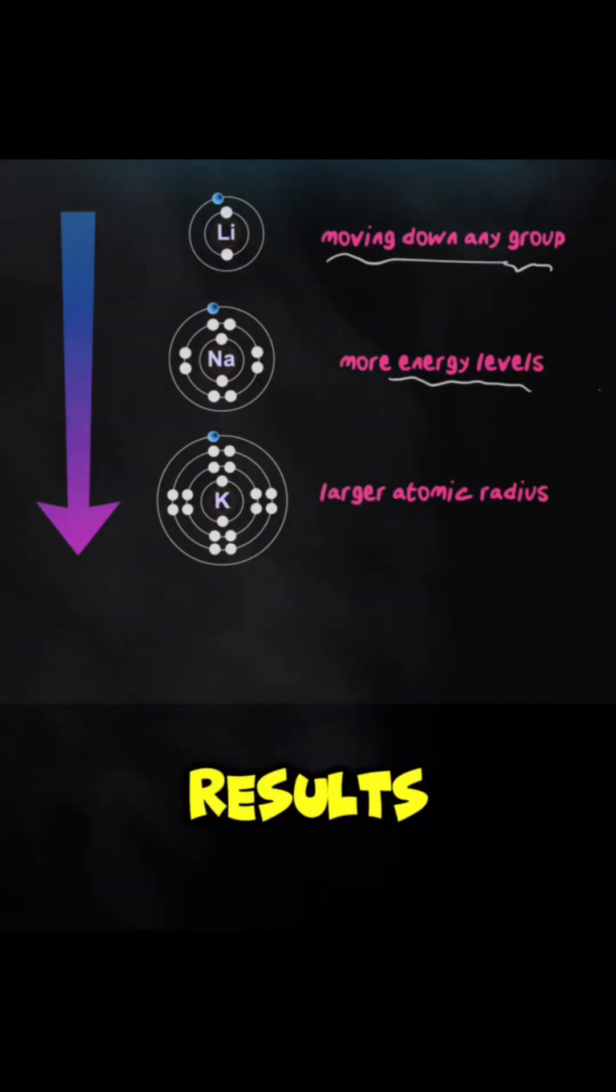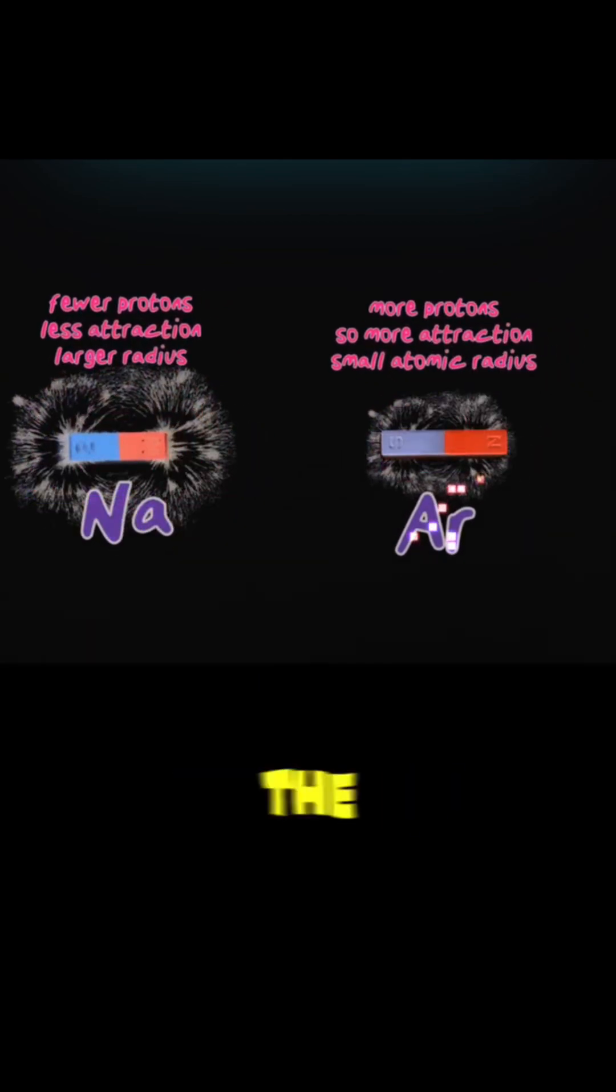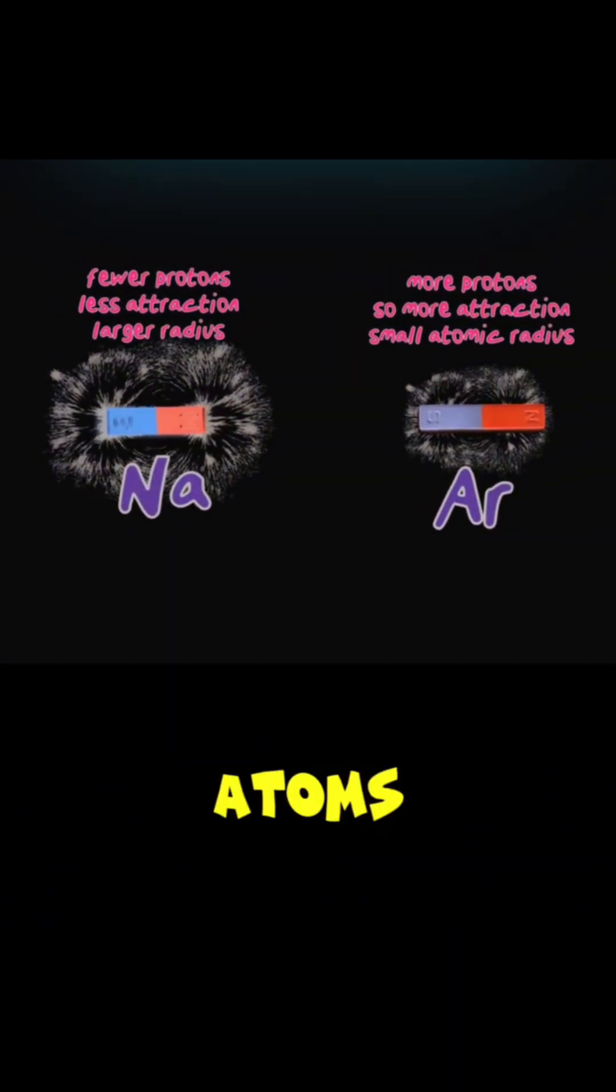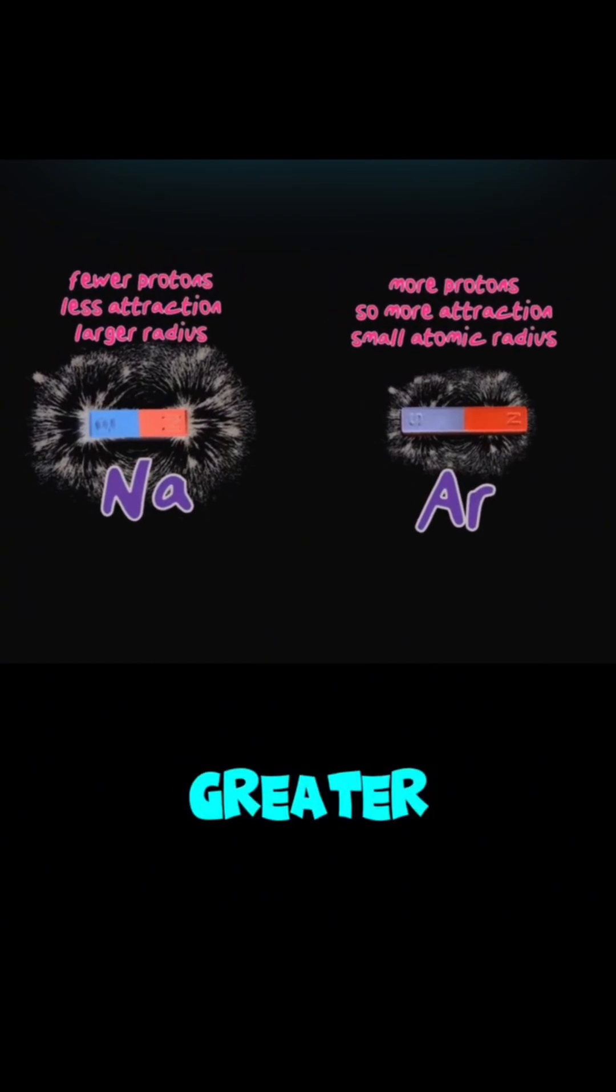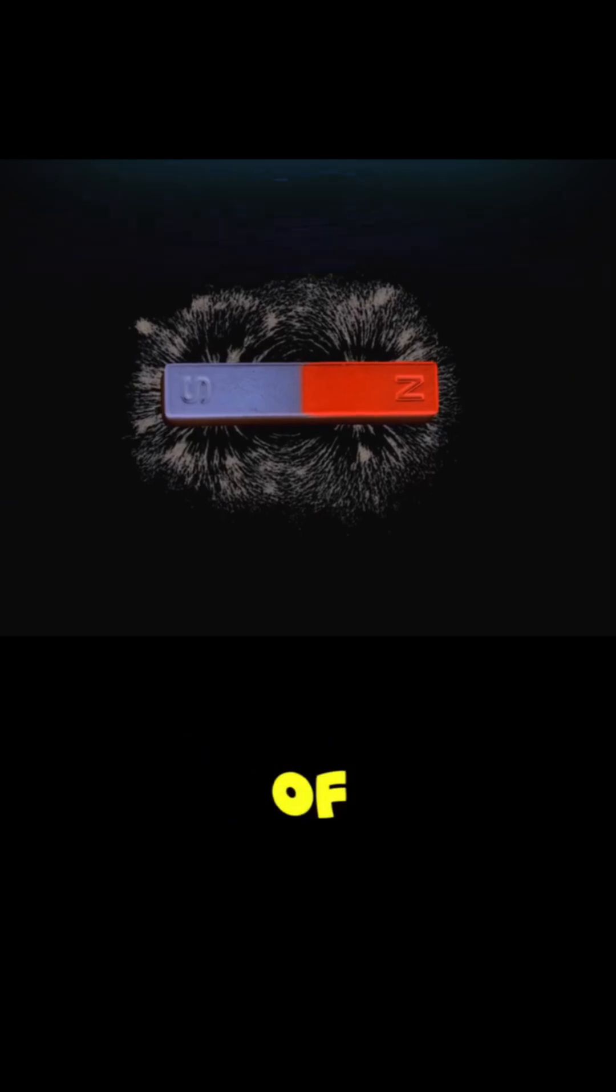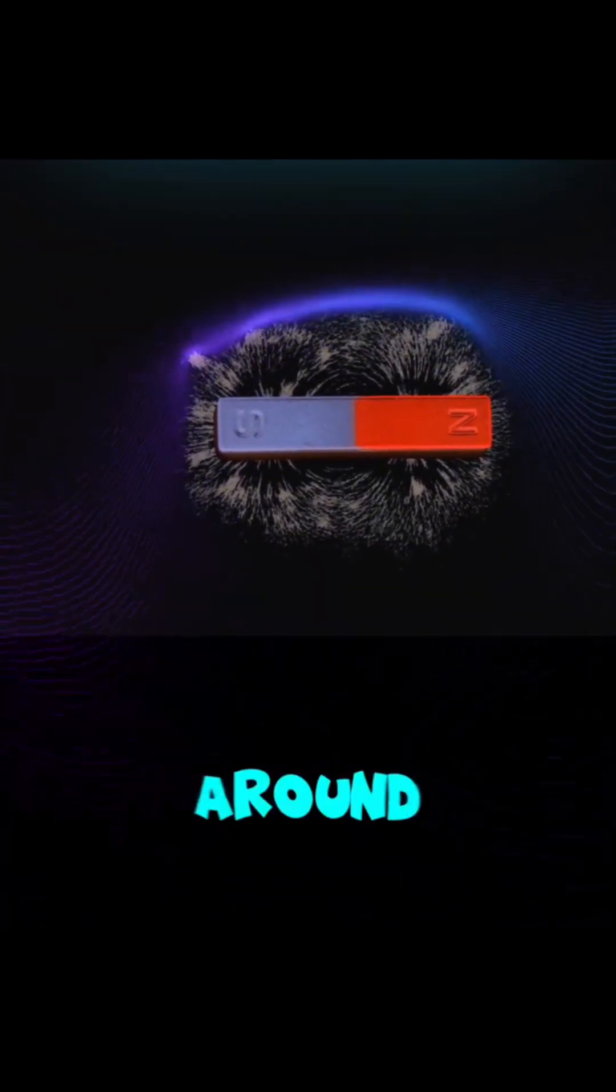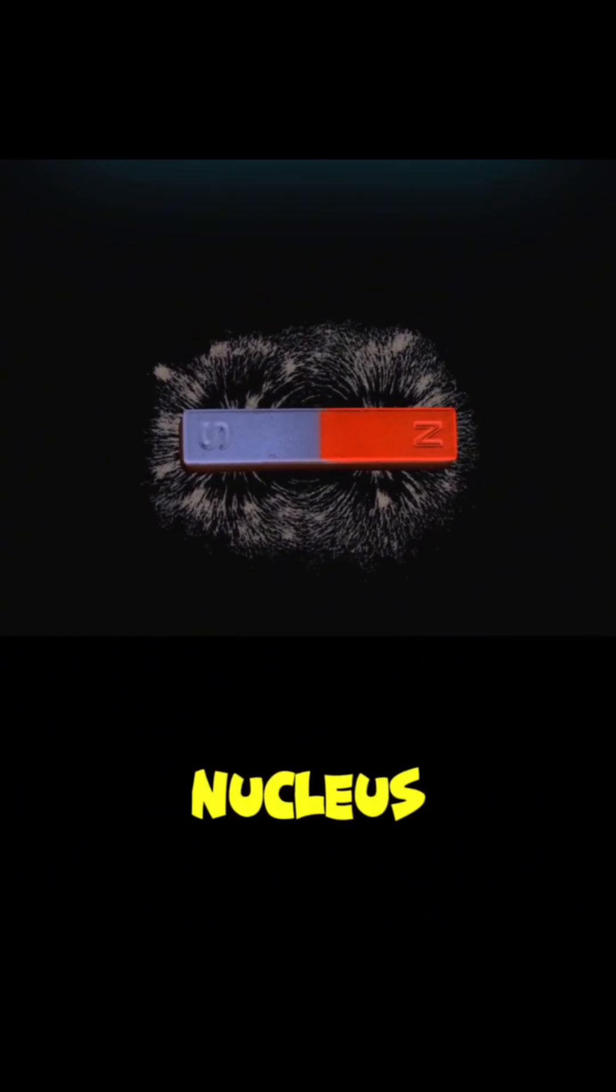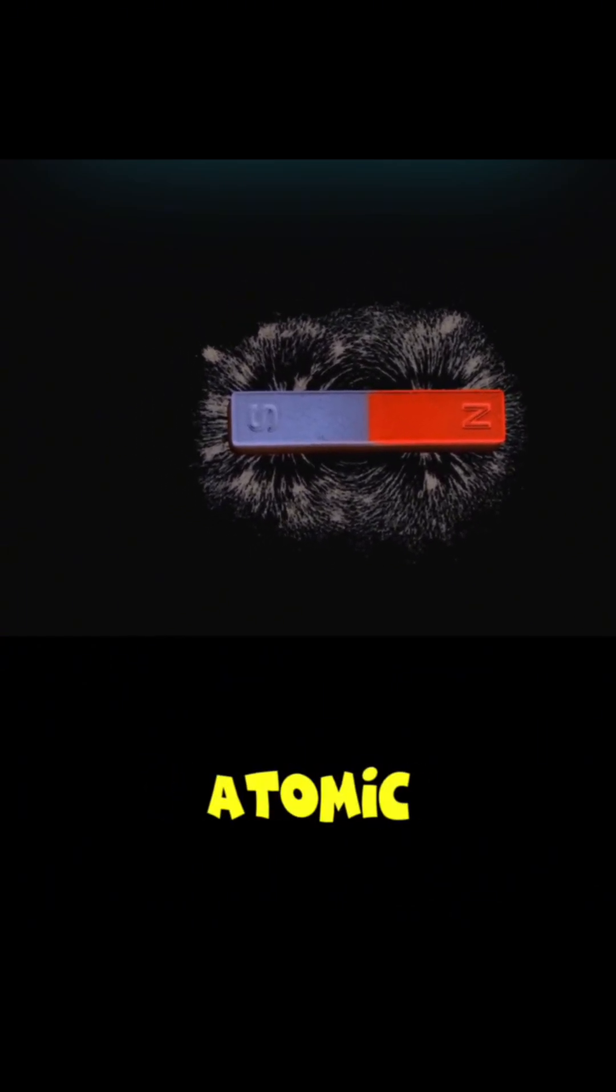The atomic radius decreases steadily as you move across. The reason for the decrease is because the atoms on the right side of the periodic table have a higher atomic number, greater number of protons, and higher nuclear charge. The nucleus of the atom works just like a magnet attracting the electrons around it. The stronger that nucleus with more protons in the center, the smaller the atomic radius.